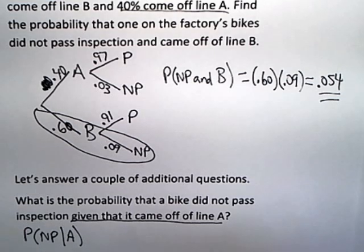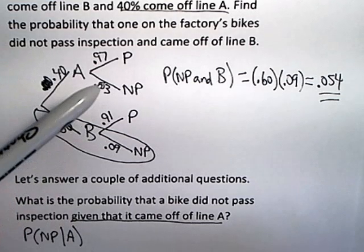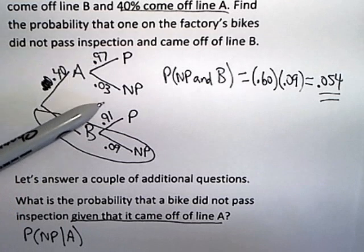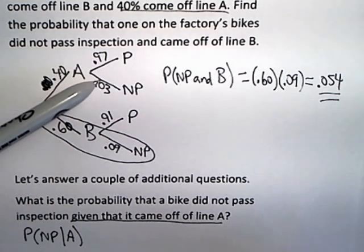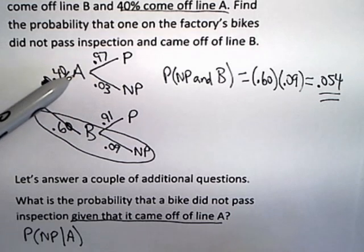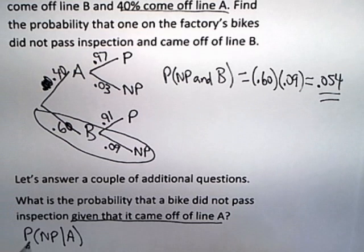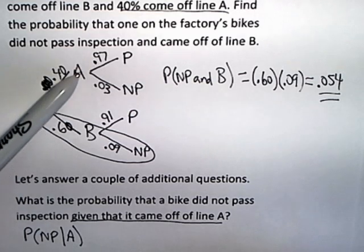Now we've also talked about this, that a conditional probability on a tree diagram are the interior branches, or I should say it this way, the interior branches of a tree diagram represent conditional probabilities, and whatever's to the left of it is what has already happened. In other words, that's the condition. So if I'm looking for the probability that a bike did not pass inspection given that it went down assembly line A, that means I've already gone down this branch and I'm sitting here.